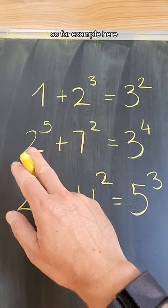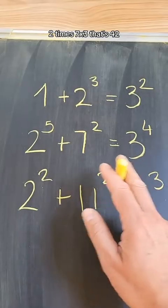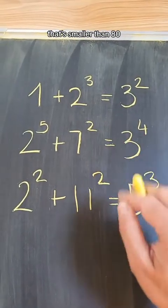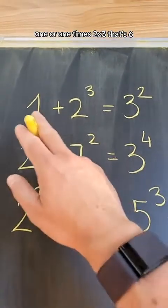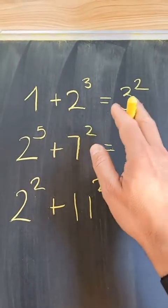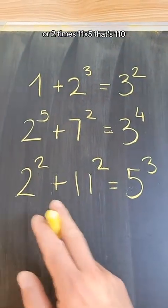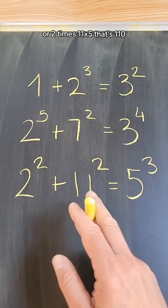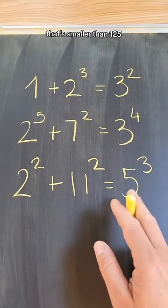So, for example, here, 2 times 7 times 3, that's 42. That's smaller than 81. Or 1 times 2 times 3, that's 6. That is smaller than 9. Or 2 times 11 times 5, that's 110. That's smaller than 125.